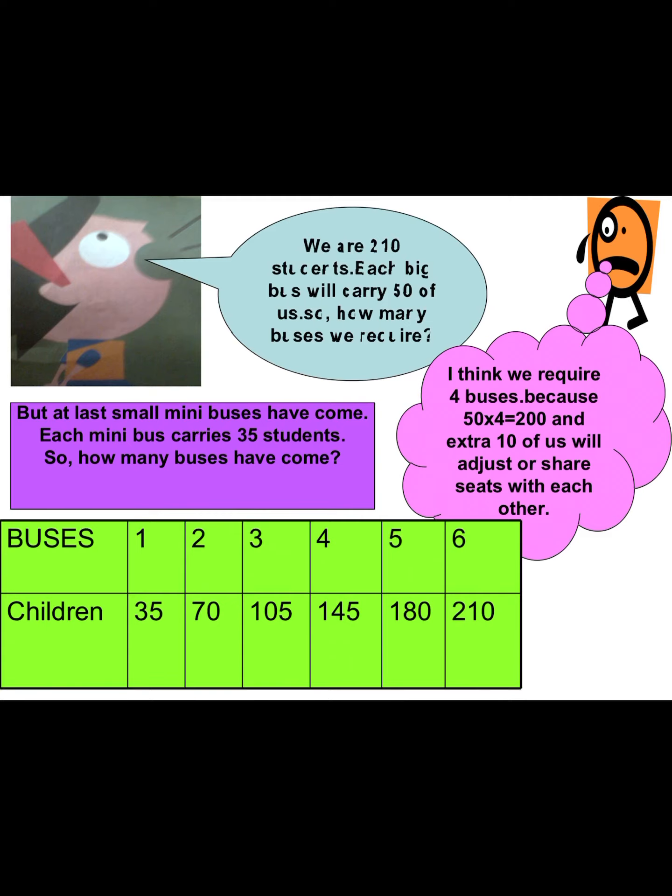Both of them are very excited. But at last, small mini buses have come. Each mini bus carries 35 students. So how many buses have come? Let's calculate: for 1 bus, 35 children can go; for 2 buses, 70; for 3 buses, 105; for 4 buses, 145; for 5 buses, 180; and for 6 buses, all 210 children can go.